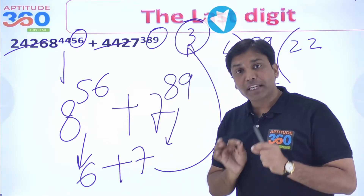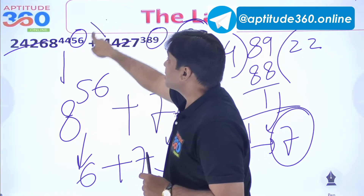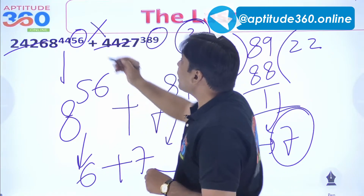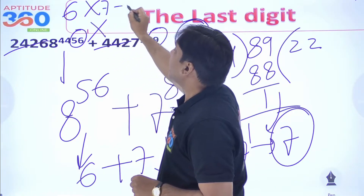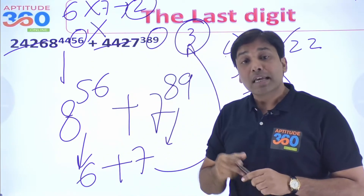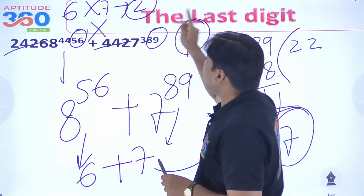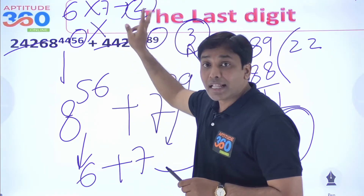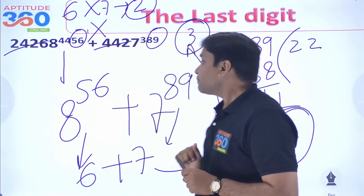If it had been a multiplication sign instead of addition, you would multiply 6 and 7. 6 times 7 is 42, so the last digit would have been 2. That would have been the answer had it been the sign of multiplication.